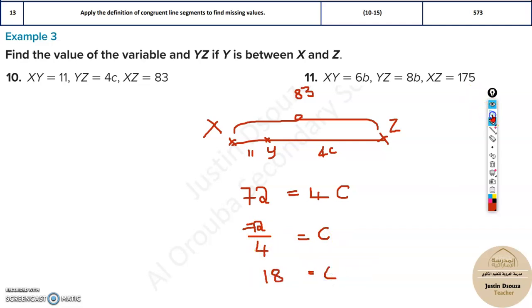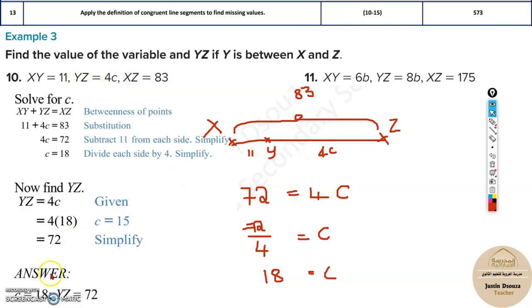This is how we can solve it. First answer, if it's the length of YZ, it is 72 units. If they're asking you the c value, it is 18. So this is how we solve it. Similarly, the other problems can be solved. Just make sure you see what is given, and then you can easily solve it up.